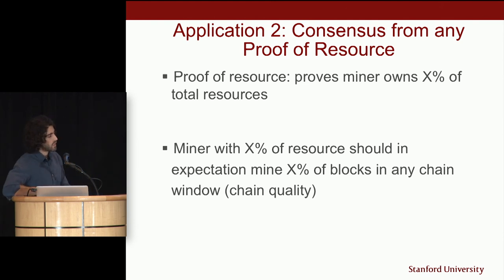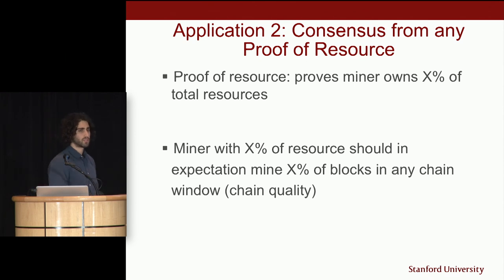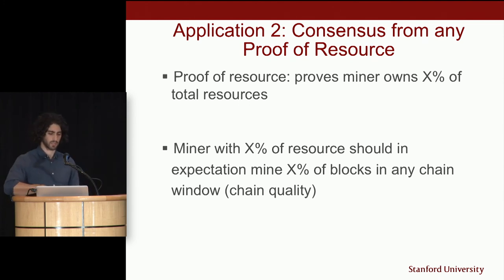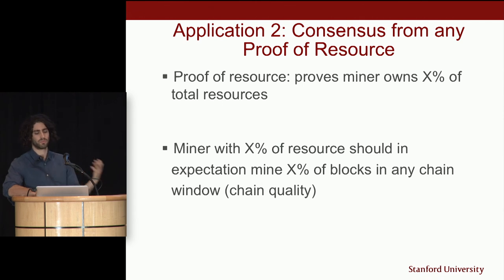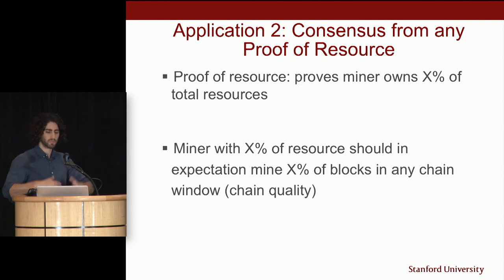Another application is combining proofs of space with VDFs to achieve a workable consensus protocol — more generally, using VDFs to compile any proof of resource into one usable for blockchain consensus. At a high level, we want a consensus mechanism where a miner with X percent of the resources should, in expectation, mine X percent of the blocks in any chain window — this is loosely referred to as chain quality.